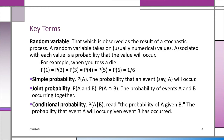A random variable is that which is observed as the result of a stochastic process. The random variable takes on values — each possible outcome or event from the process is usually a numerical value. Associated with each value is the probability that that value will occur. For example, if you toss a die — six sides, one integer on each side — the probability it'll come up a one is the same as two, three, four, five, or six. They're all equally likely, so each has a probability of one-sixth.